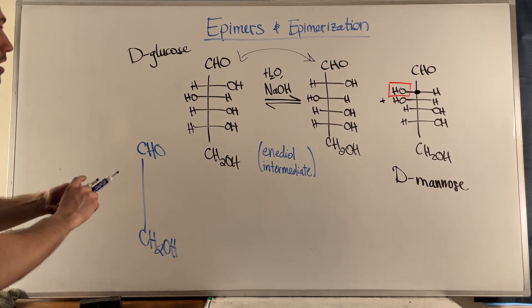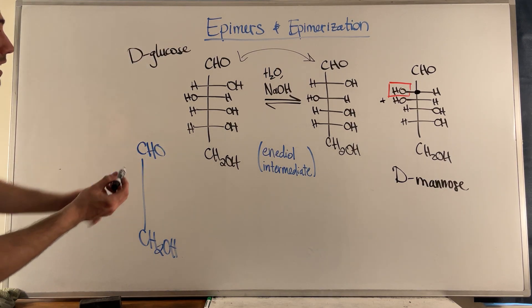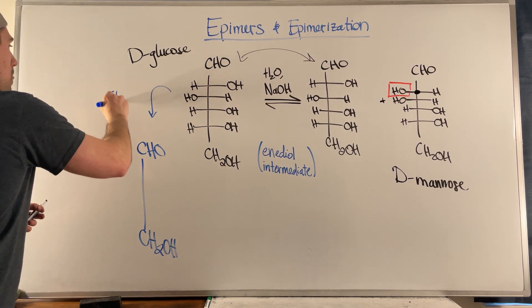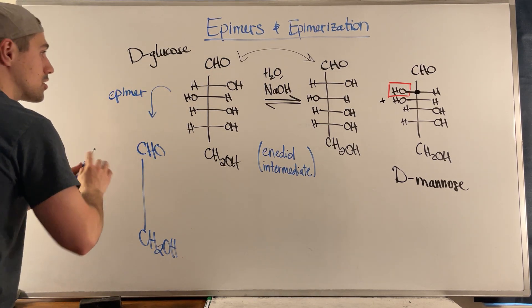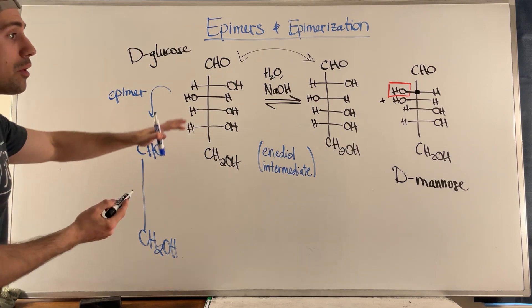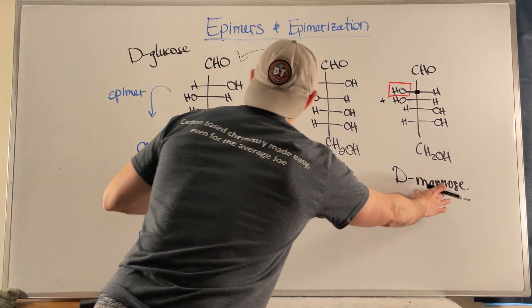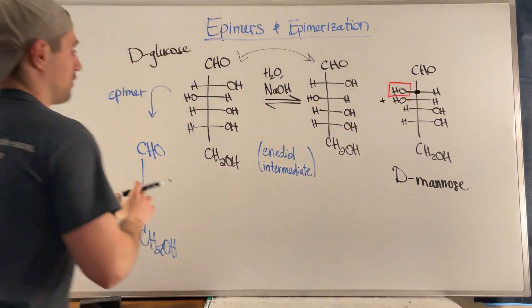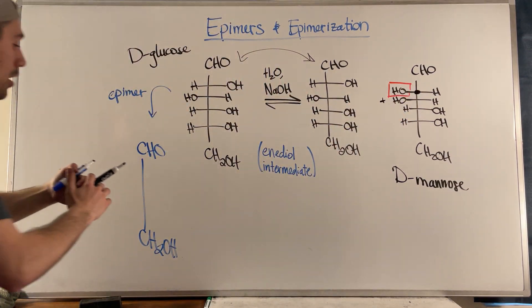So for example, if we had this right here, let's just say I wanted to draw an epimer of D-glucose. So I could just change, D-mannose, for example, is an epimer of D-glucose because we flipped one stereocenter. But if I want to draw a different epimer of D-glucose, I could flip the second one.